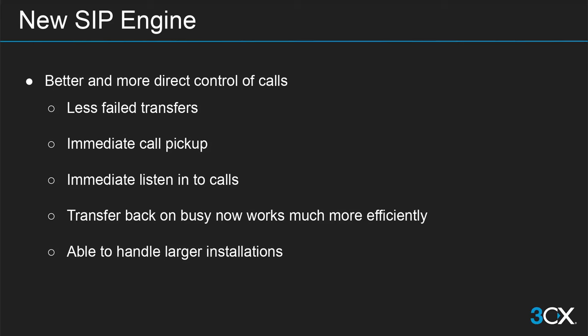Version 20 is not just a new interface — it is a rewriting of the entire system from the ground up. Using a new SIP engine, we are able to give a lot more performance, be more flexible and agile, and give better and more direct control of calls. Functionalities that were previously sluggish are now a lot more performant. For example, we are able to immediately listen into calls with no delay. This will also allow us to handle larger installations where more users will be happy using 3CX.